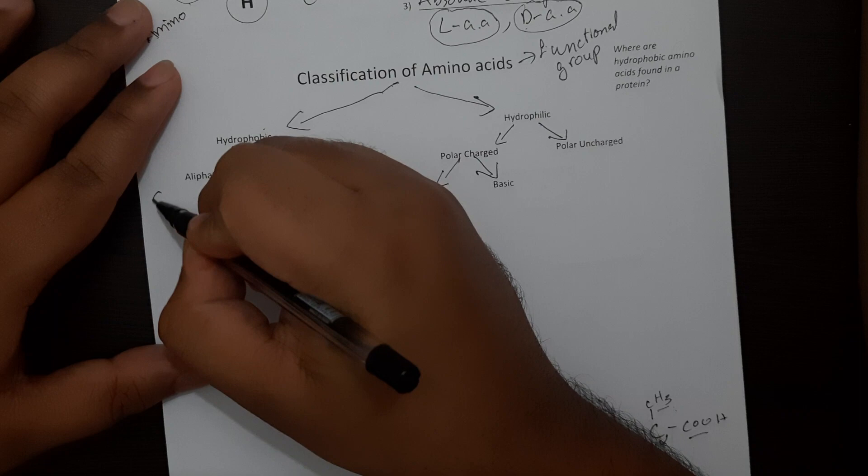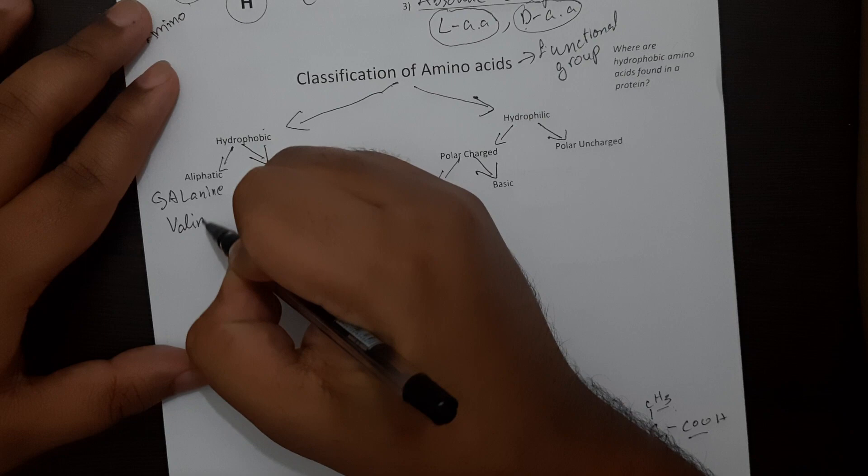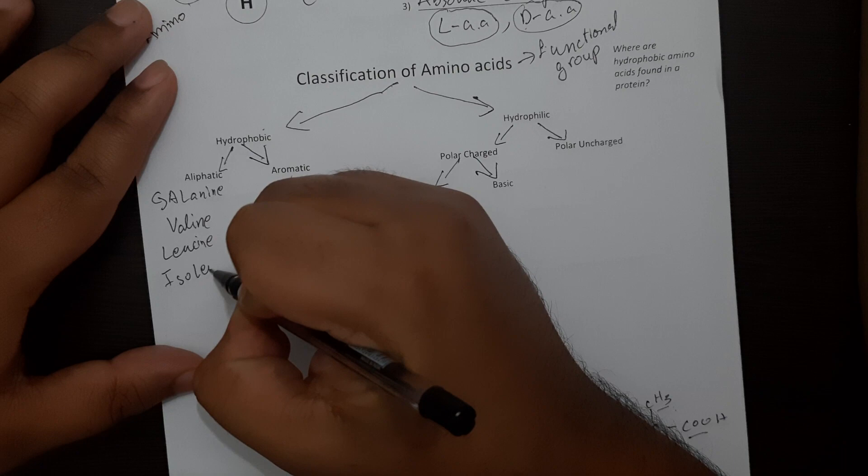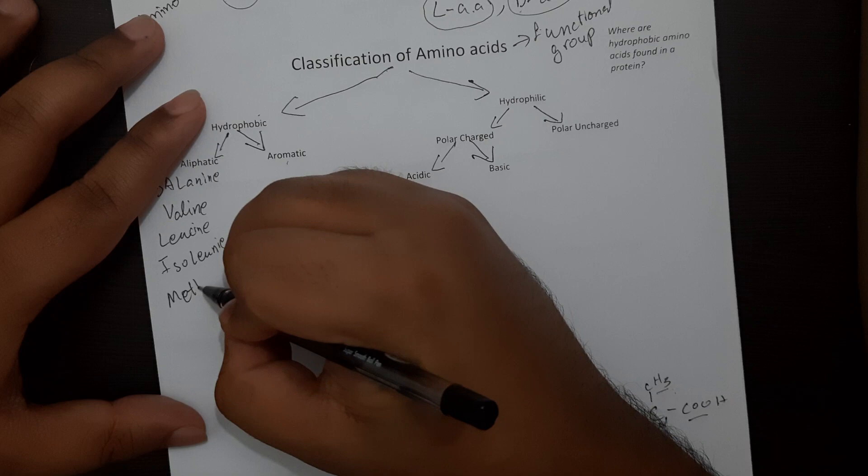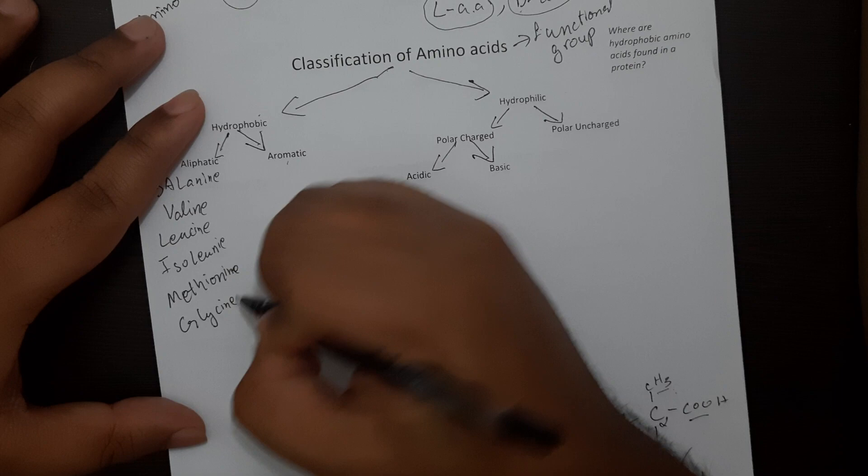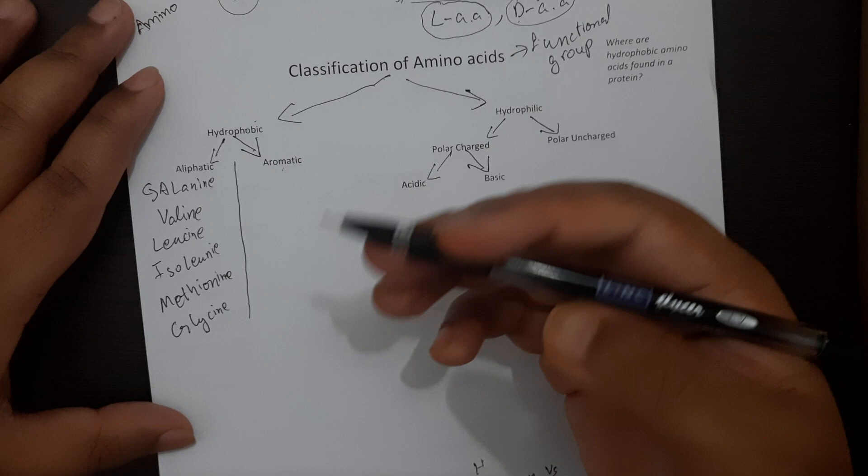So the aliphatic amino acids include alanine, valine, leucine, isoleucine, methionine and glycine. So these are your aliphatic hydrophobic amino acids.